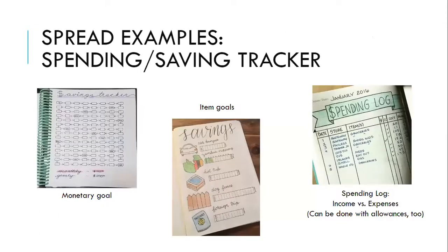A spending and saving tracker — there are multiple ways to do this. There's a spending log for paying bills, sort of like a budget. There are item goals and even a total monetary goal if you want to save a certain lump sum. The middle picture is great for item goals — you can keep track of specific things you want to save for, like a trip or home repairs. In this picture the person wants to save for a hot tub and a dog fence, with little boxes sketched out by number of dollars, so they color in each box to reach that final goal.